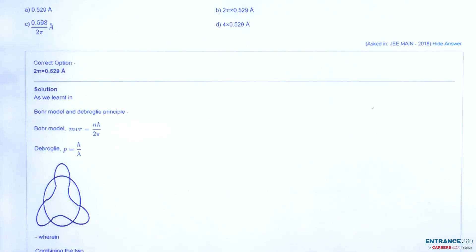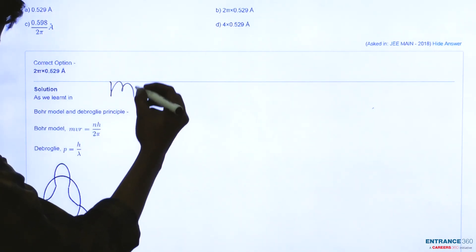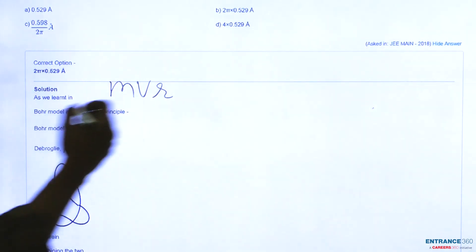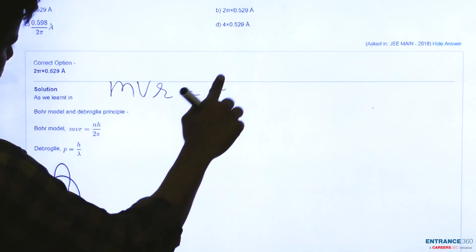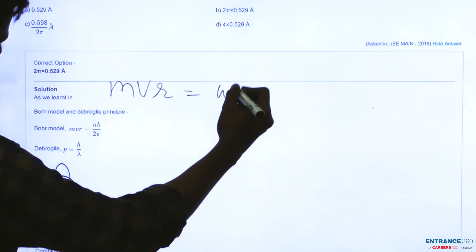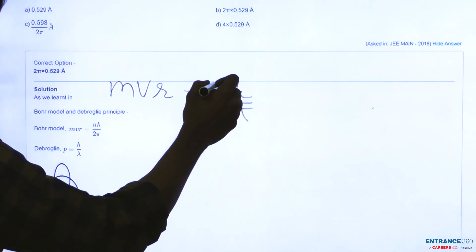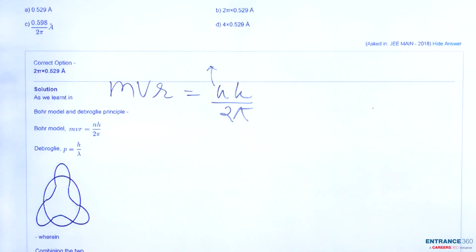As we know in Bohr model the angular momentum is given as mvr, the product of mass, velocity and radius, is given as nh upon 2π, where n is the orbital state and h is our Planck constant.